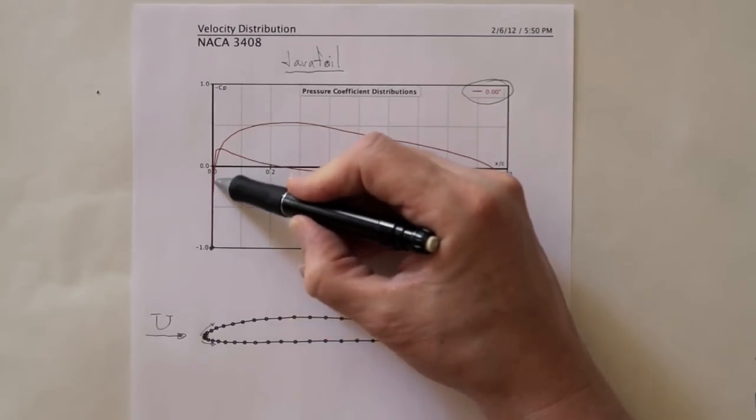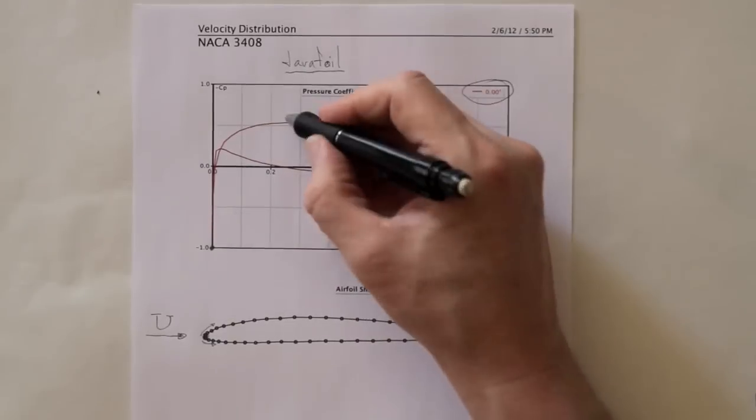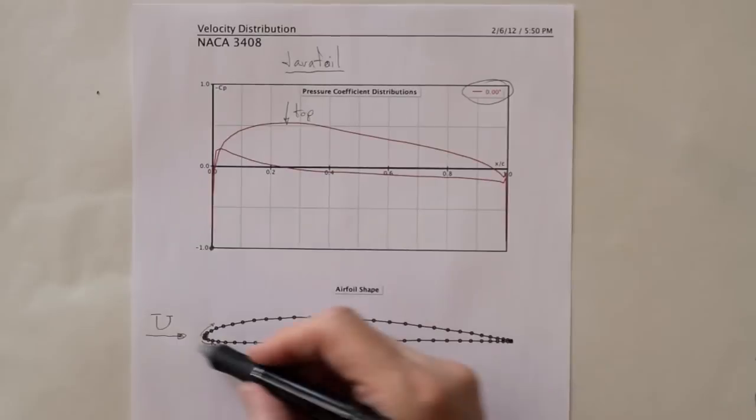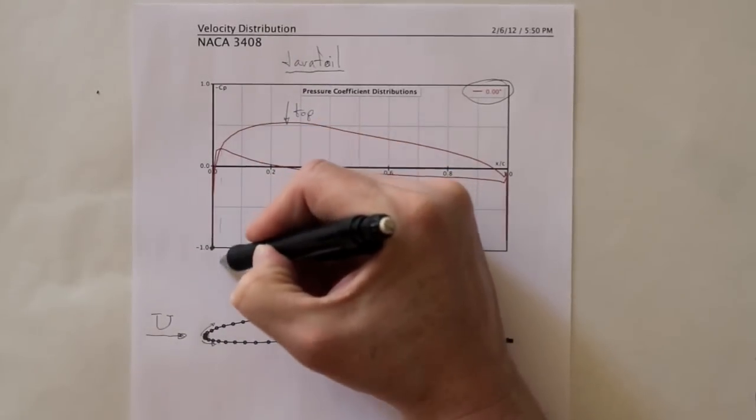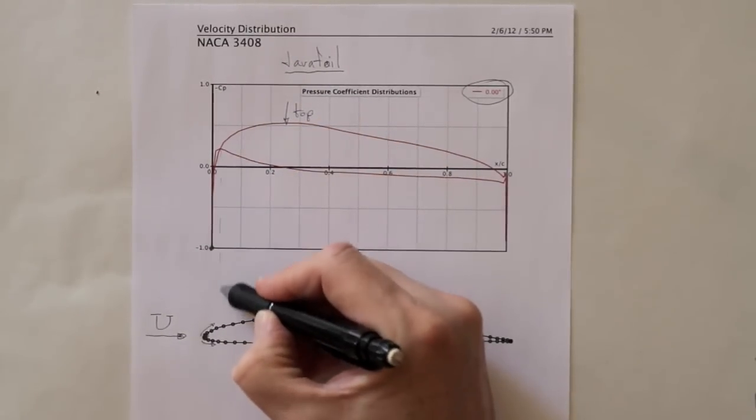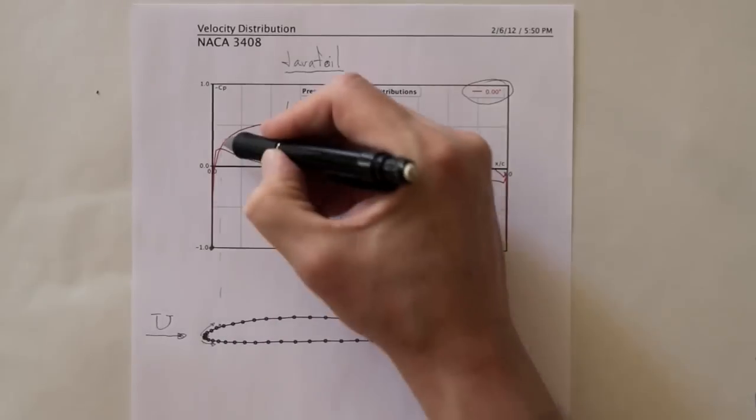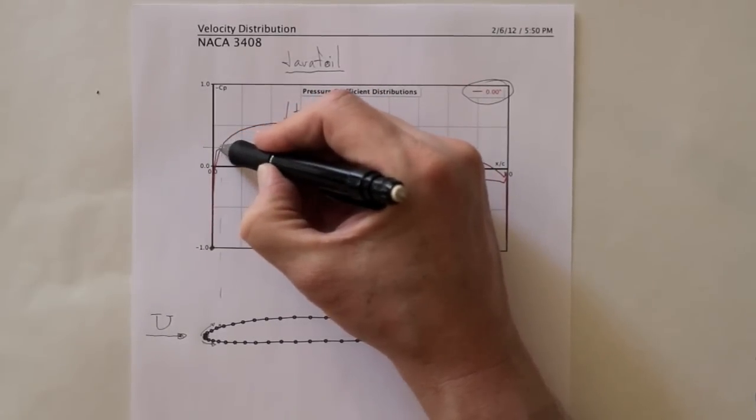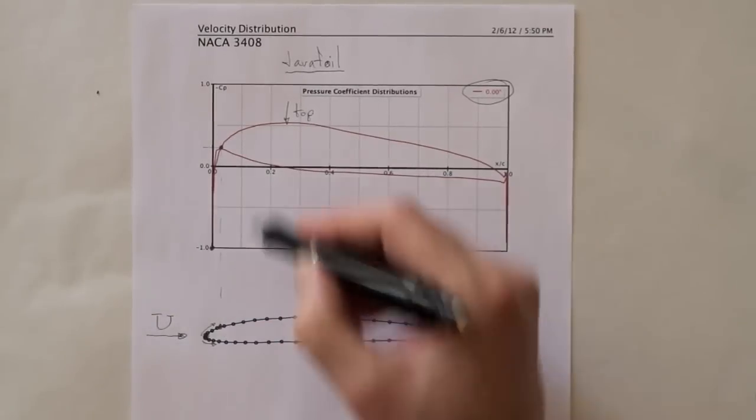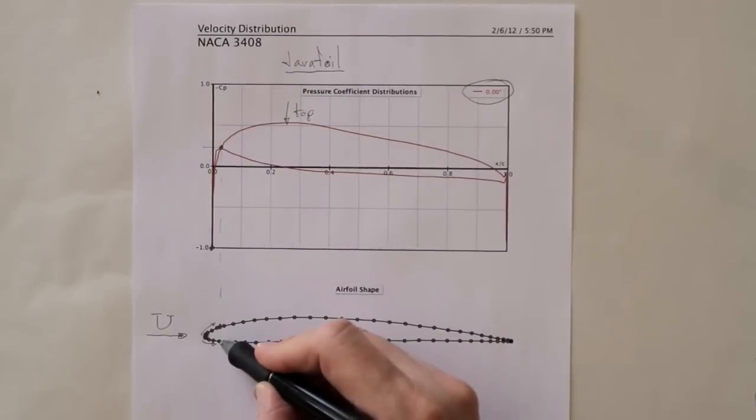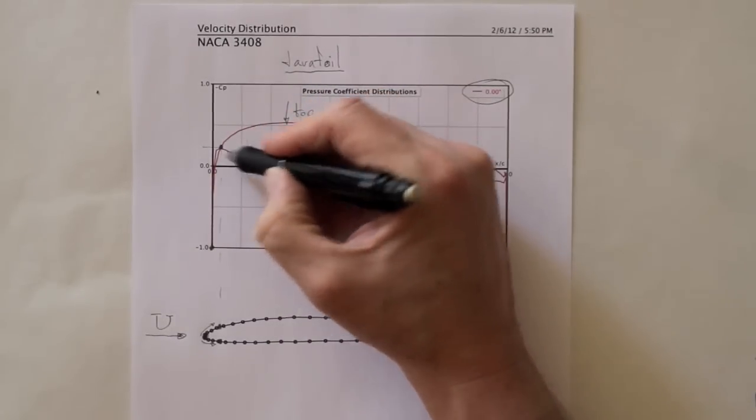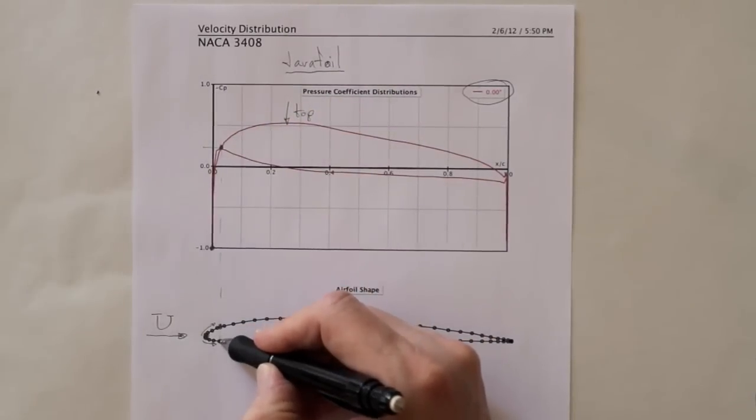So on top the pressure follows this line, and by the time we get to about here we've got a fairly substantial negative pressure on the top. But at that point the negative pressure on the bottom is also quite substantial and just as big. So there's no lift generated by this part of the wing.